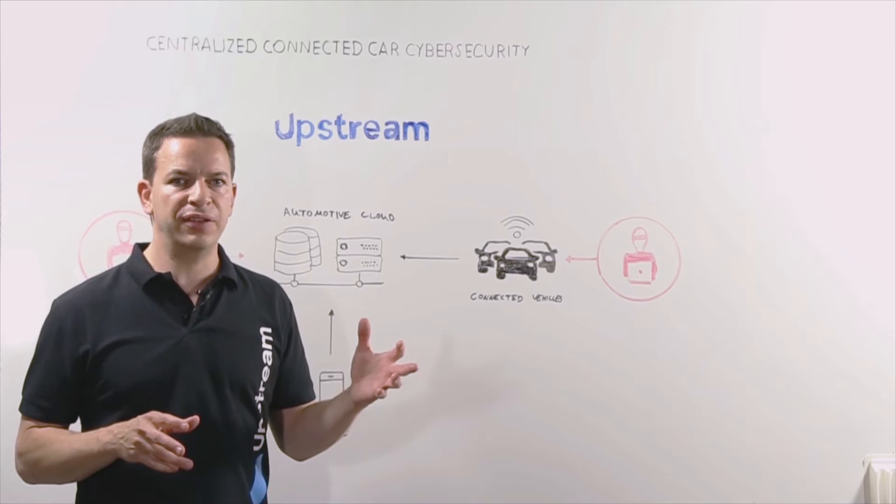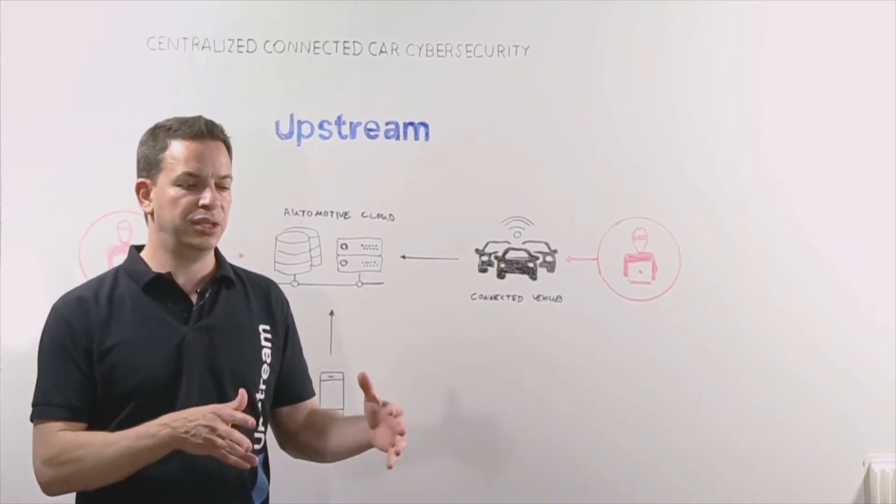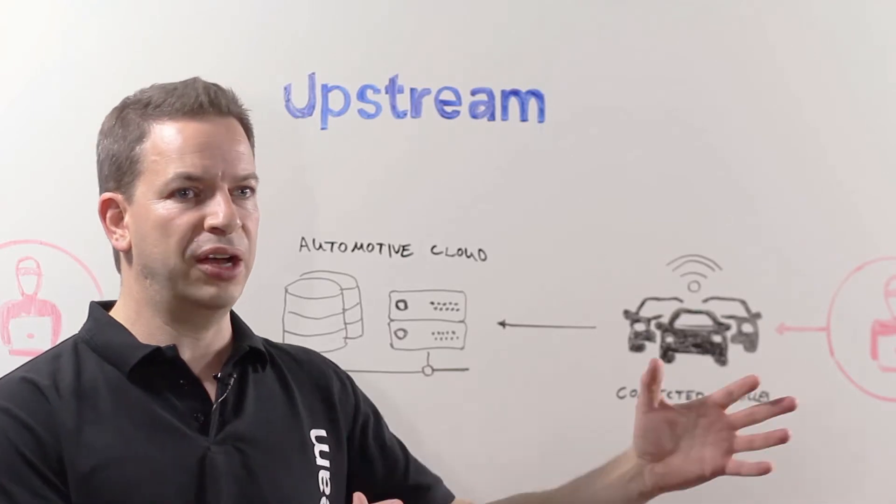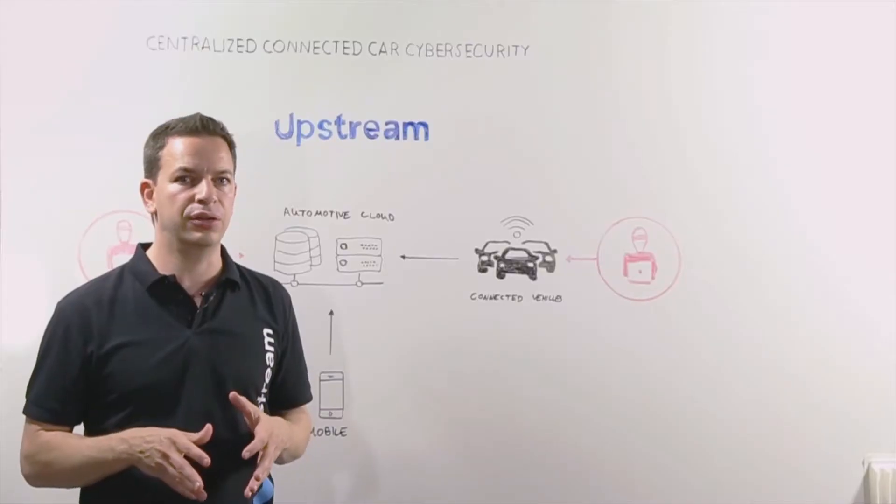If you look back as near as five to ten years ago at a typical vehicle, you could say it was air-gapped. Basically, it had protection from the outside world. There was no way a hacker could penetrate it unless they were physically near that vehicle.